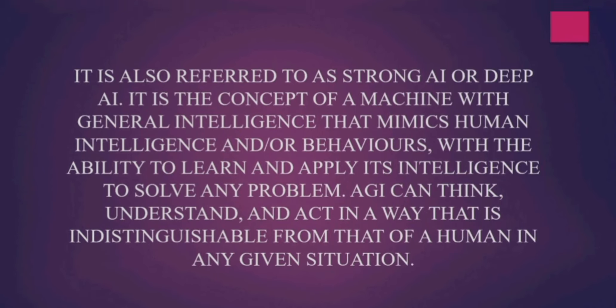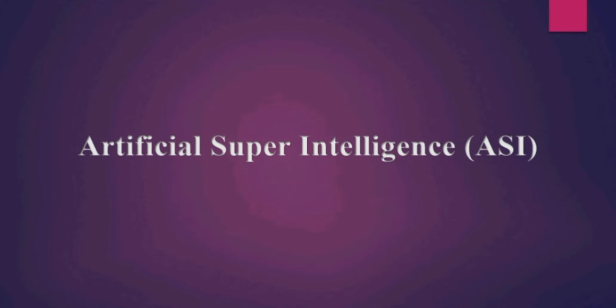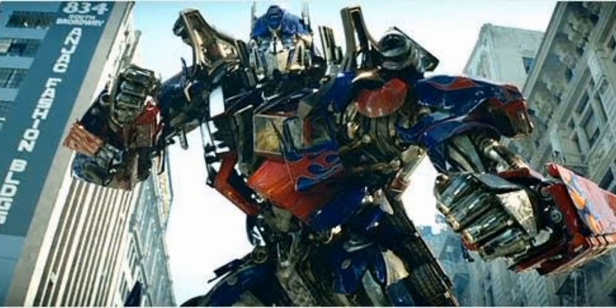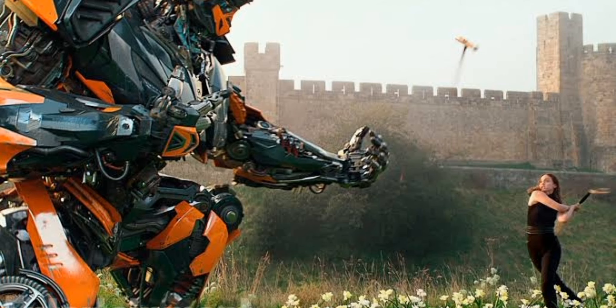The next type is artificial super intelligence. ASI is the hypothetical AI that doesn't just mimic or understand human intelligence and behavior — it is where machines become self-aware and surpass the capacity of human intelligence and ability. Super intelligence has long been the muse of dystopian science fiction, in which robots overthrow or enslave humanity. If artificial super intelligence is achieved, then films like Transformers would come into real life.